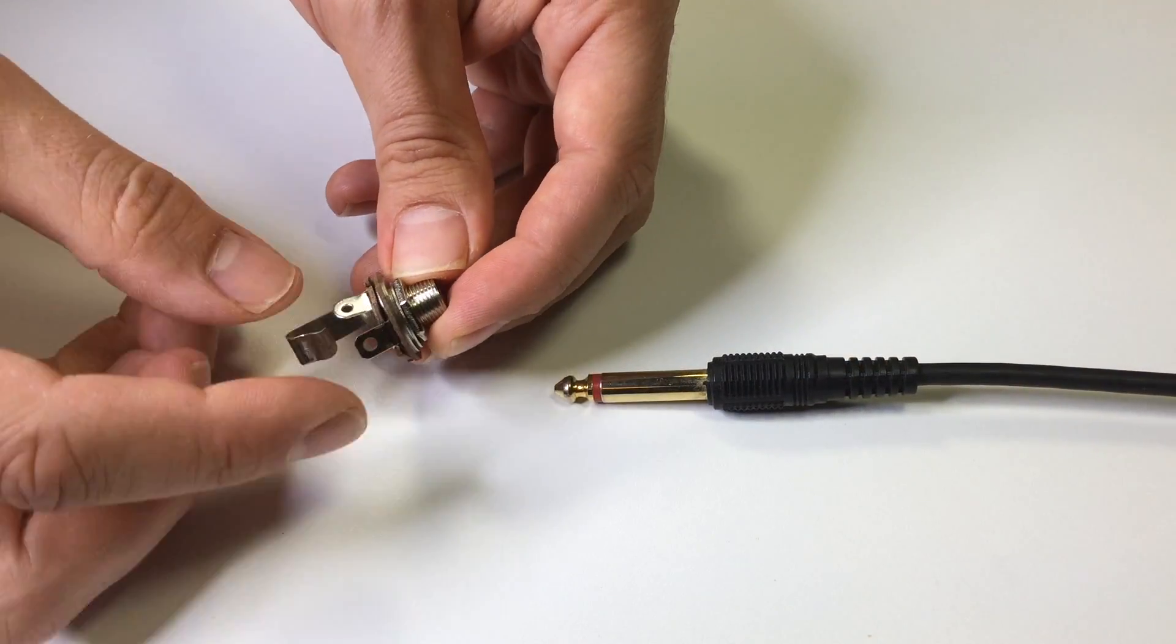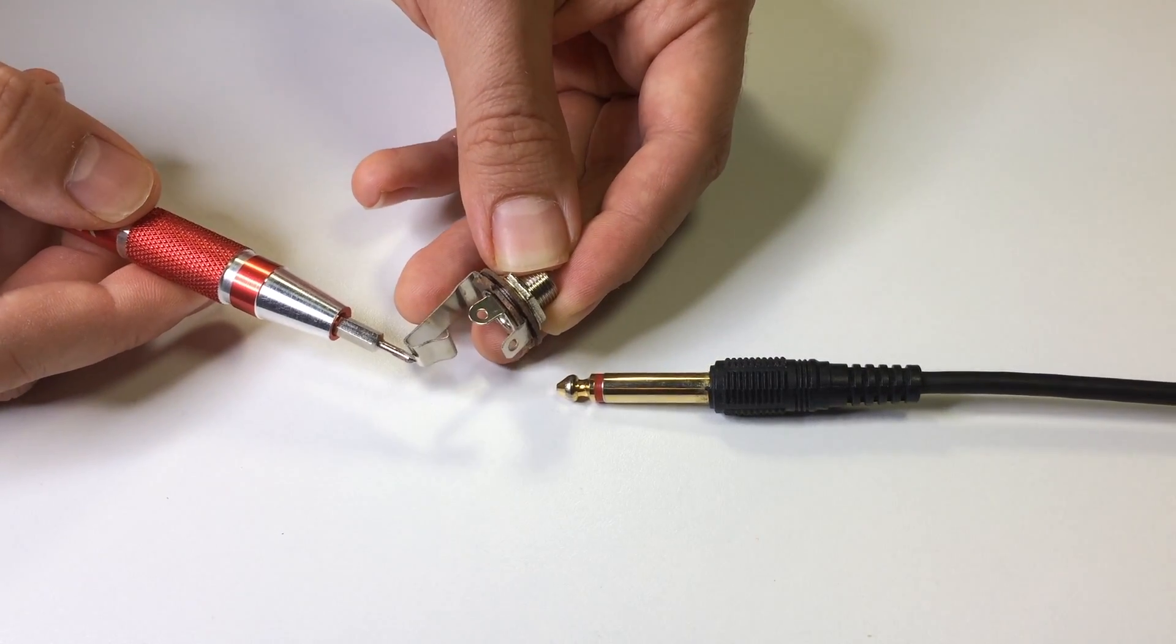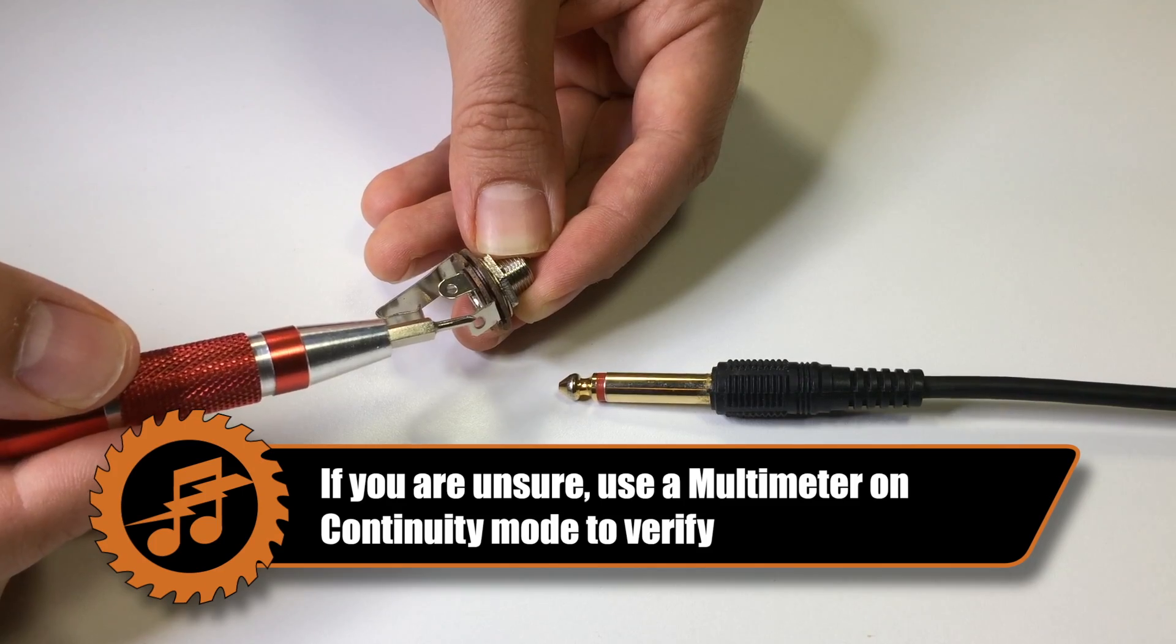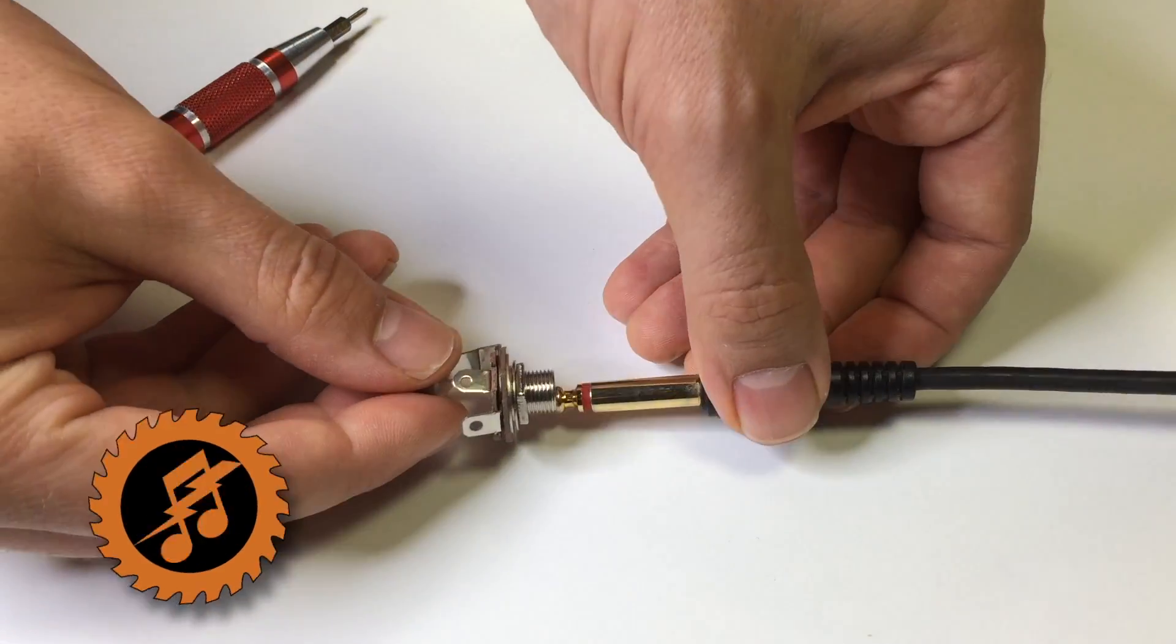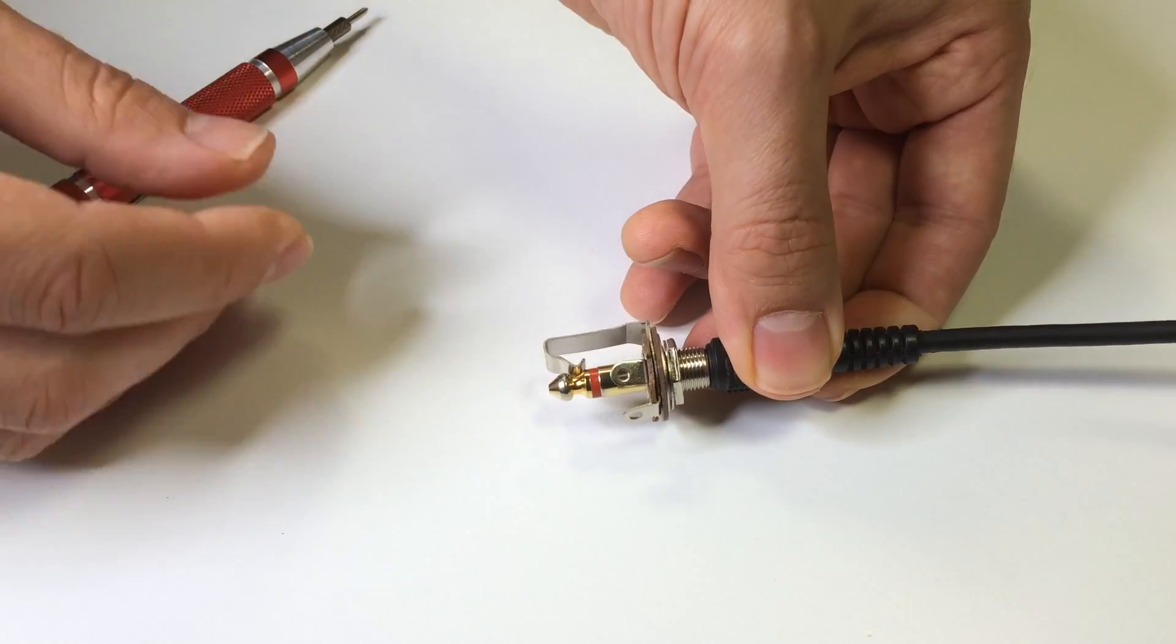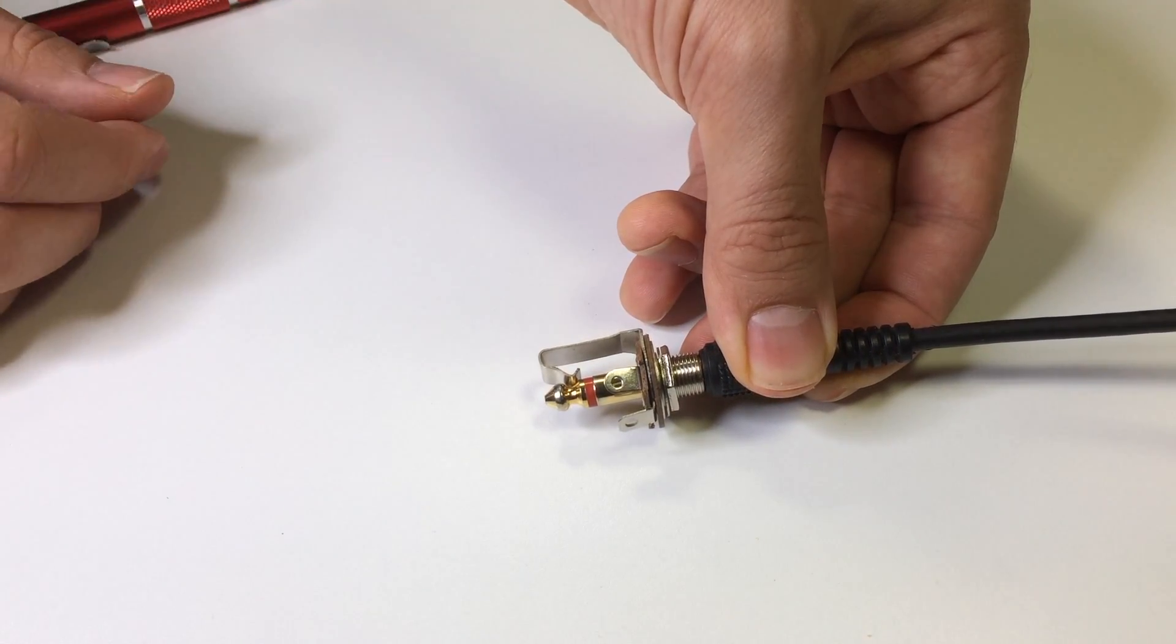When you insert the plug into the jack, the tip of the plug will touch this piece here, which connects to this terminal. The other terminal connects to the sleeve. In our circuit, the tip of the plug is positive and the sleeve is negative.